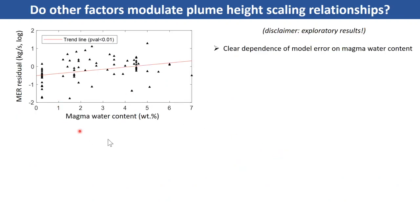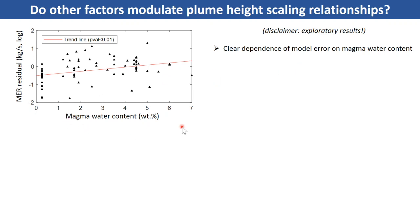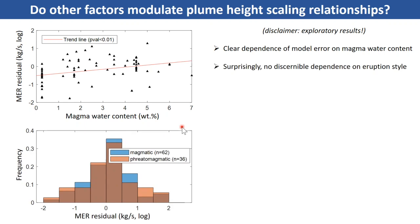Looking at how residuals for the wind-accounting model depend on other eruption source parameters in iVespa: starting with magma water content on the x-axis and mass eruption rate residual (model error) on the y-axis, even though there is a lot of scatter, there is a main trend that is positive and significant at the 99% level. This means there is a clear dependence of model error on magma water content, which makes sense because water content greatly influences the buoyancy flux of the plume, which is critical for plume dynamics.